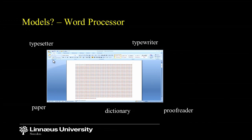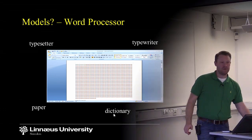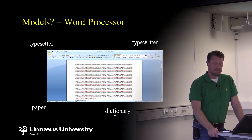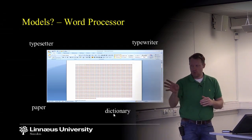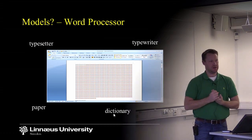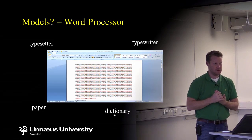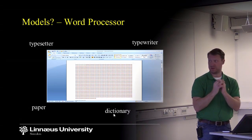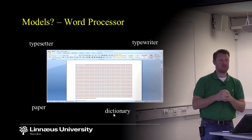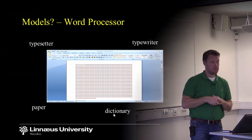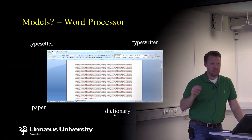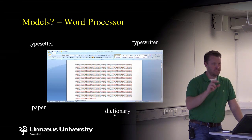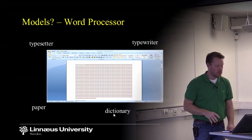These different models together make up the model of the word processor — proving the point of hierarchy, where you can decompose the word processor into a model for the proofreader, a model for the dictionary, and so on. What's included in any of these models is two things: information — typically about the state of the paper, the typewriter, the typesetter — and behavior. Information and behavior is what you find in these models.